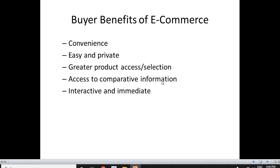The next benefit is access to comparative information. Comparisons are done on the internet and the consumer can compare between two brands. There is a lot of information about different brands, so the consumer can make a choice of buying a particular product or not. The next one is interactive and immediate. It is very interactive because consumers can get answers to any question posted on the internet. There is a lot of dialogue between the seller and the buyer, and it is immediate. If you booked a product, you immediately receive an SMS or email that your order is confirmed — you need not wait for days.